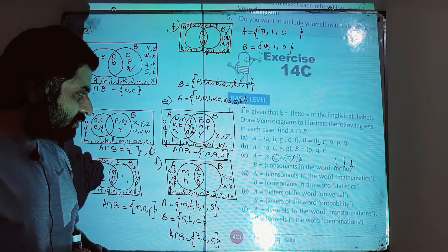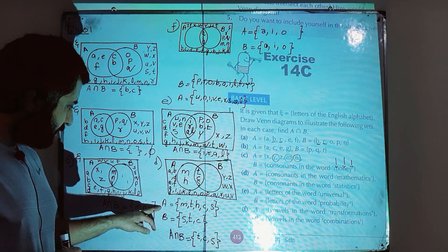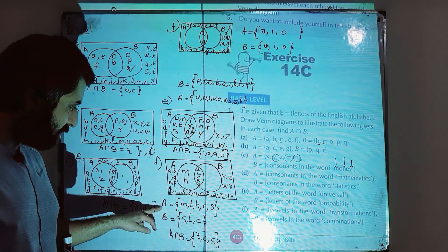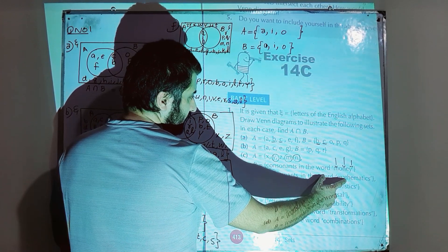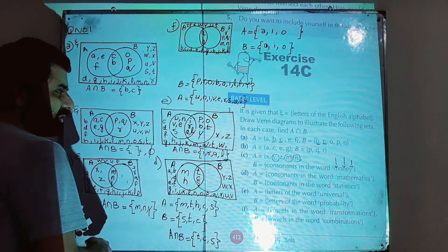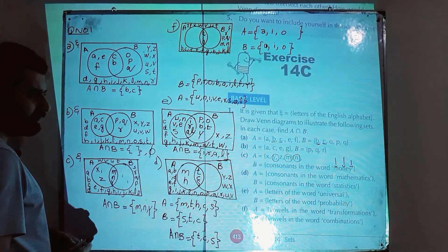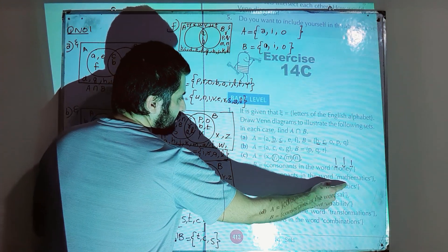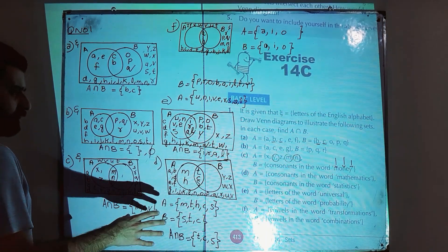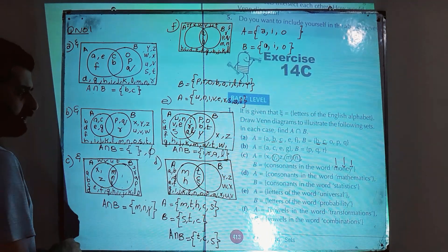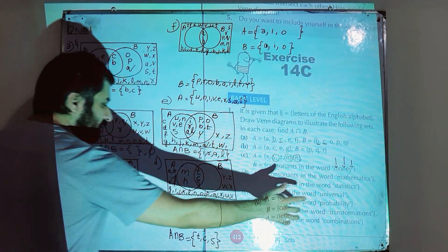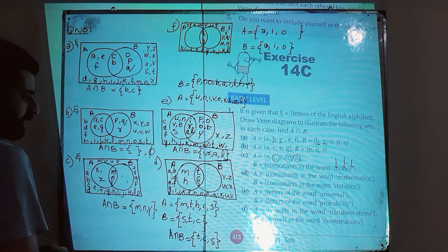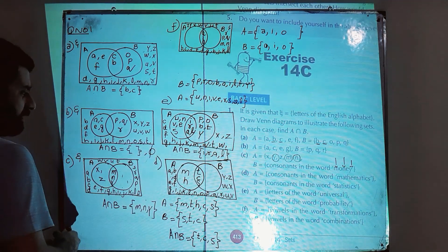Part d: set A contains the consonants in the word 'mathematics', which are m, t, h, c, s. Note that repeated letters are written only once — for example, t and m each appear twice in 'mathematics' but are written only once. Set B contains the consonants in the word 'statistics', which are s, t, and c. Now we represent this in a Venn diagram with a rectangle for the universal set.